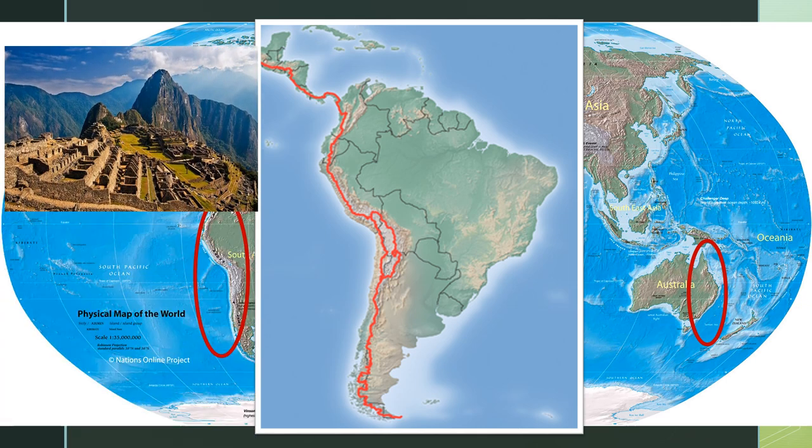Since the Andes Mountains are located so close to the Pacific Ocean, the water that falls on the west side of this continent does not have very far to go.